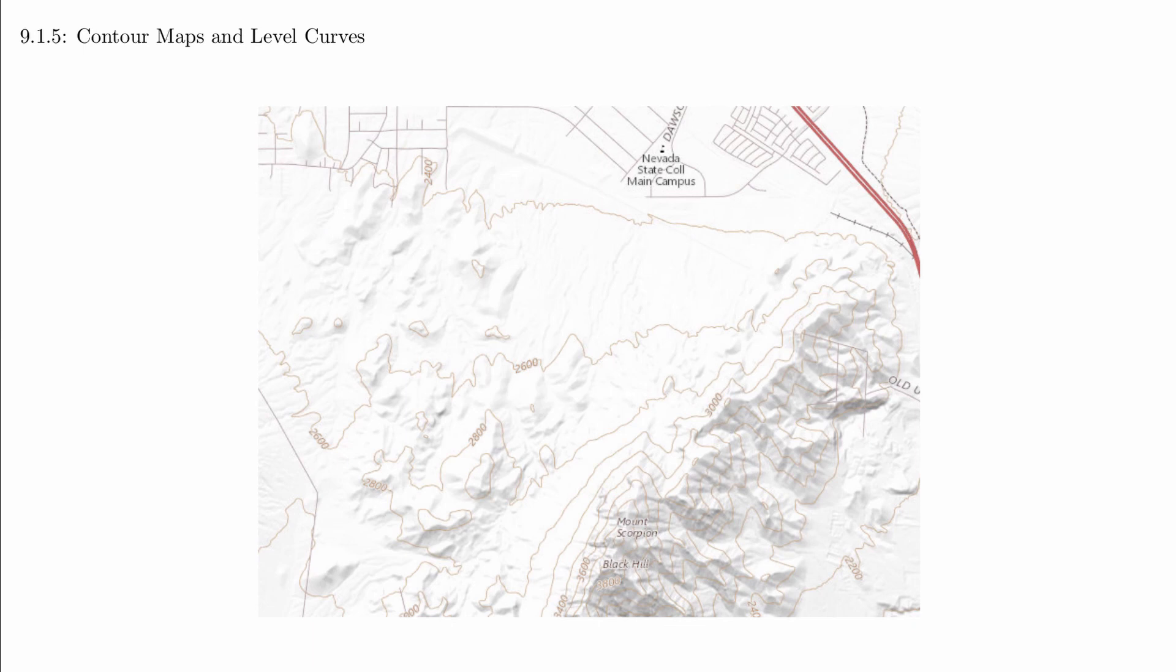A practical application of this is reading a topographical map if you're going hiking. This is a topographical map of the land near Nevada State. The level curves correspond to specific altitudes and can be used to understand the shape of the terrain.